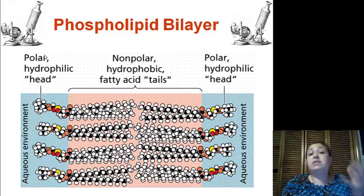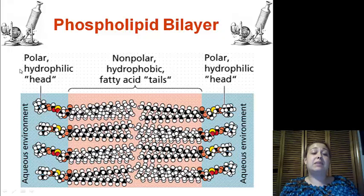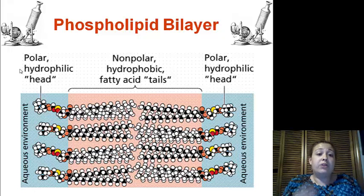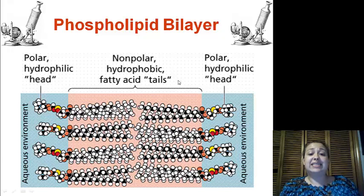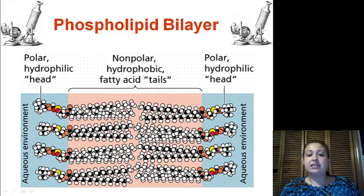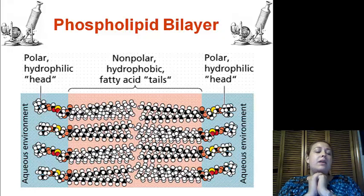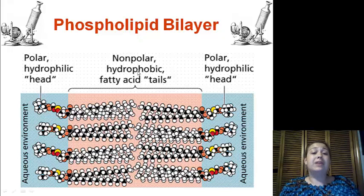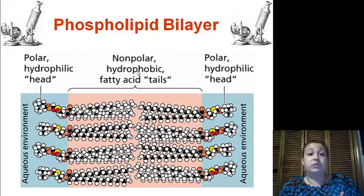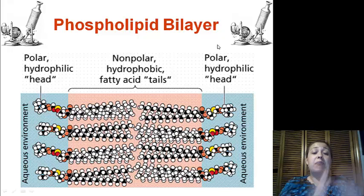Now the heads, or the phosphate groups, are going to be polar, which means they have a positive and a negative piece. This allows them to be hydrophilic — hydro meaning water, philic meaning loving — which means that these can touch water. Now the nonpolar, or hydrophobic, meaning water fearing, fatty acid tails cannot touch water, therefore water will not move through. That goes for polar material as well — nonpolar tends not to want to interact with polar molecules. This makes a very good barrier for keeping items out and keeping items in.